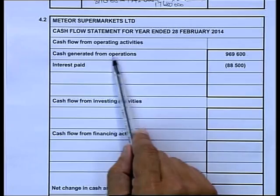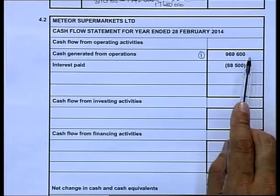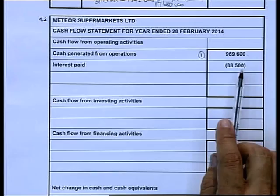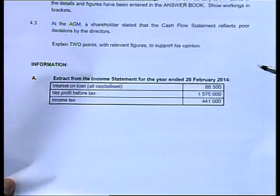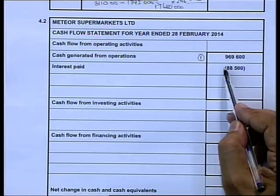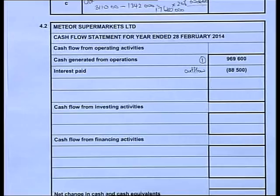The note for cash generated from operations is given - that's generally note number one of your cash flow. In this activity that note was not necessary to do because they gave us the final answer. The interest paid was also given, but we can also get it from the information. The 8,500 is where that interest figure comes from. Please take note that if it says interest paid, you show it in brackets indicating it's an outflow.